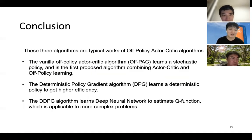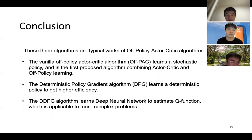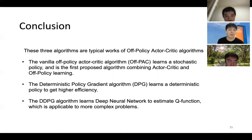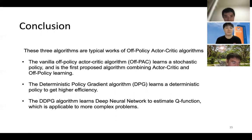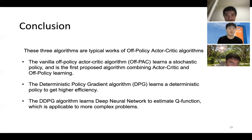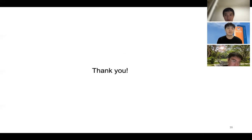In conclusion, the three algorithms are typical works of off-policy actor-critic algorithms. The vanilla OffPAC learns a stochastic policy and is the first algorithm combining actor-critic and off-policy learning. The deterministic policy gradient learns a deterministic policy for higher efficiency. And the deep version, DDPG, combines tricks from deep networks and the Q function, making it applicable to more complex problems. That would be all for us. Thank you.